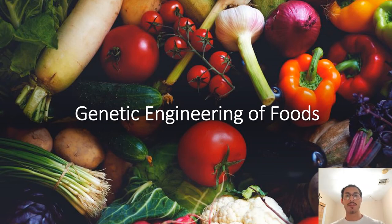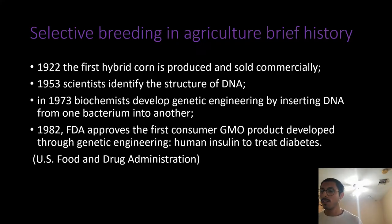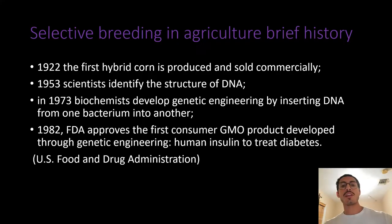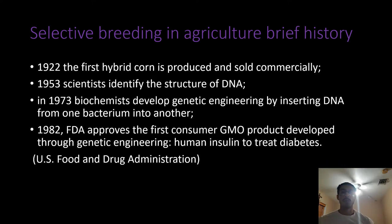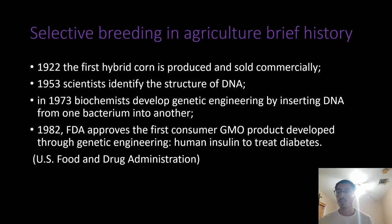Hello class, my name is Roberto and I chose Genetic Engineering Foods. Artificial selection, also known as selective breeding of organisms through biochemical policies, gets rid of undesirable qualities. In this slide I show a brief timeline of the history of selective breeding in agriculture.